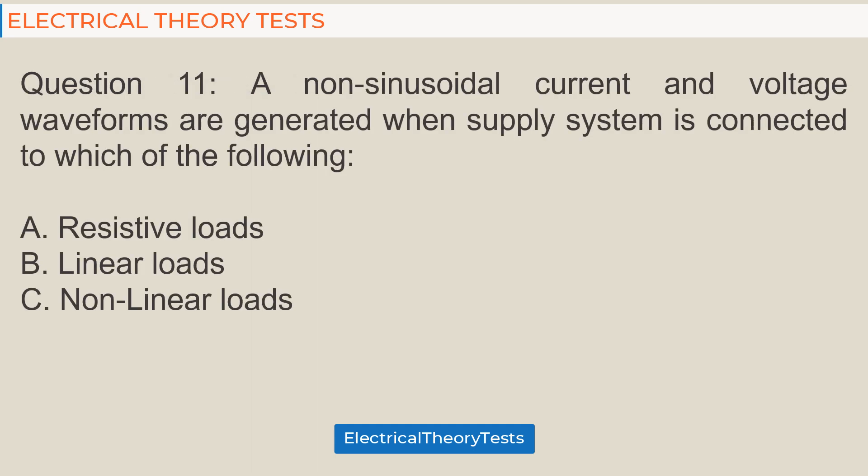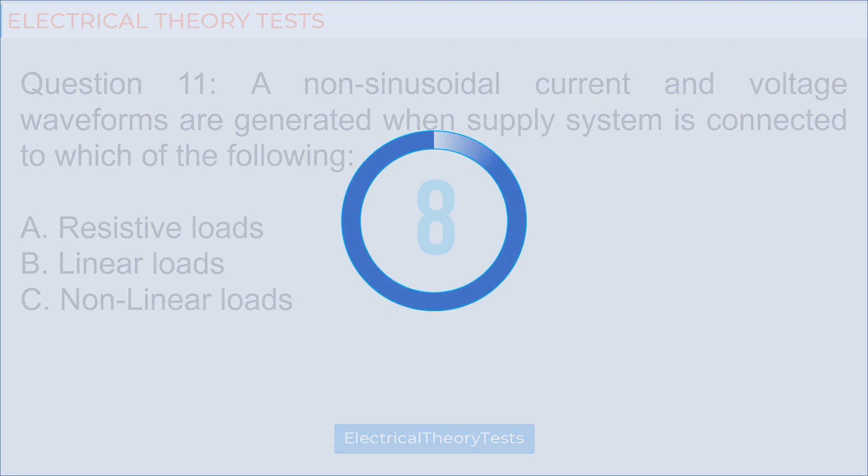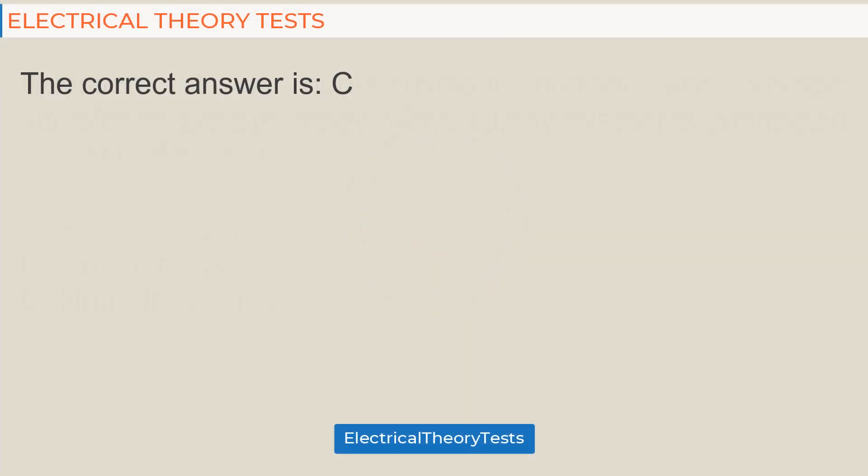Question 11: A non-sinusoidal current and voltage waveforms are generated when supply system is connected to which of the following: A. resistive loads, B. linear loads, C. non-linear loads. The correct answer is C.